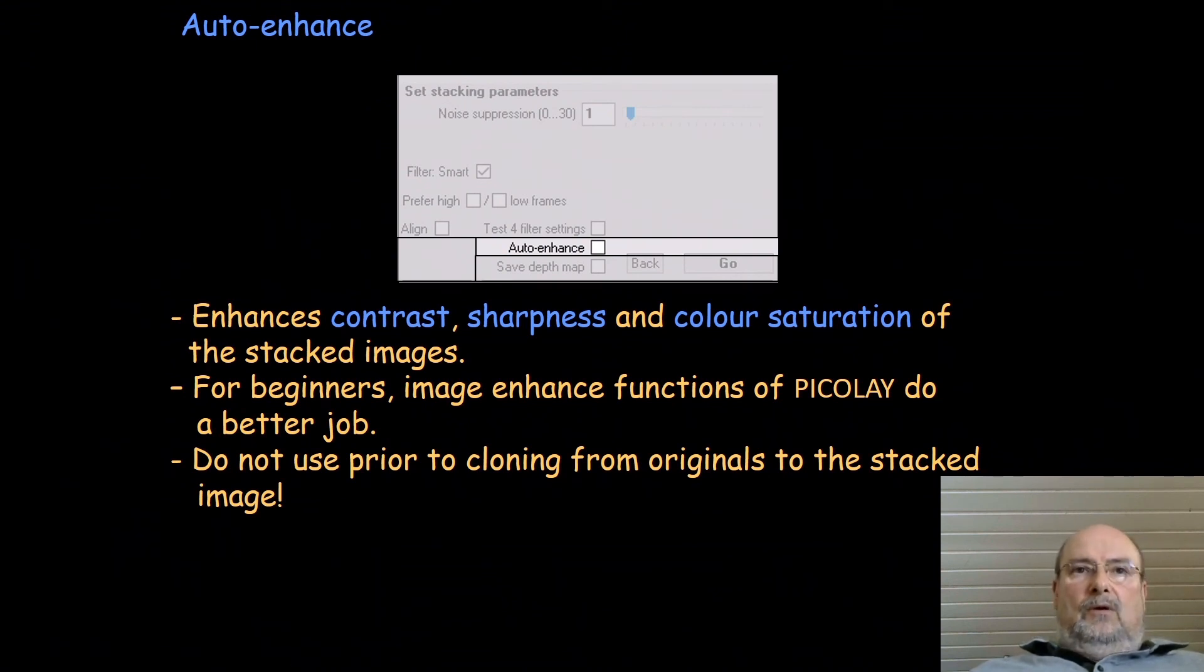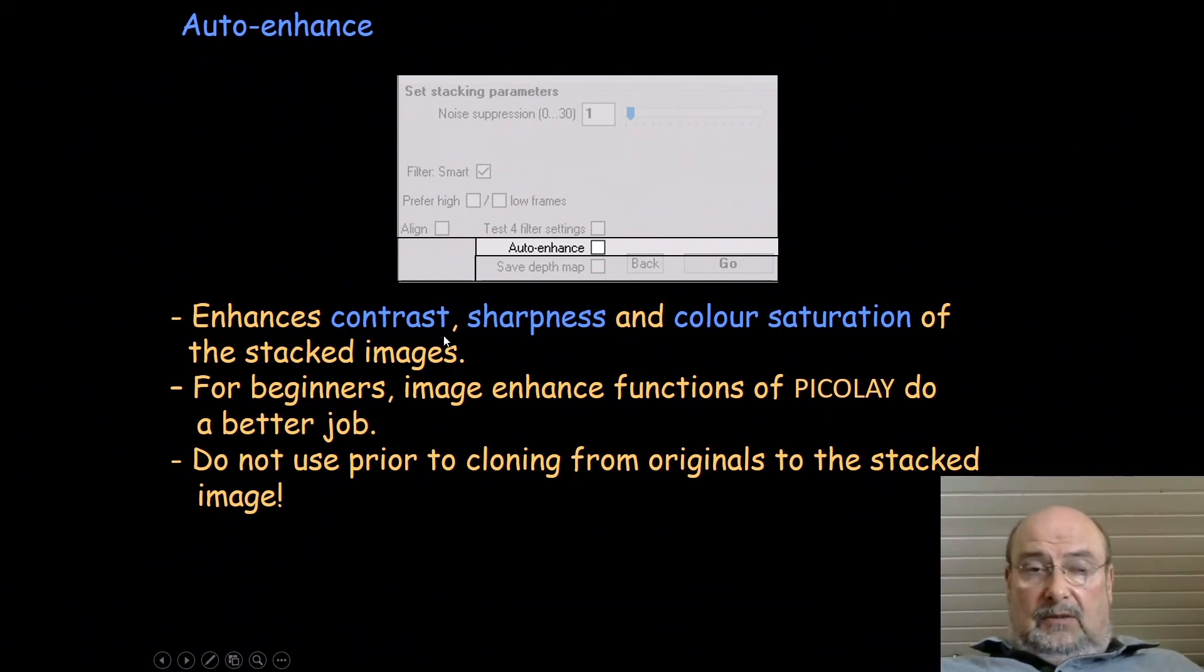Then there is another parameter: auto enhance. What does it mean? It leads to enhancement of contrast, sharpness, and color saturation of the stacked image. They're looking more crispy and a little bit more colorful. But actually I'm not recommending this very much. It's for beginners. If you're not willing to use the image enhancement functions of Picolet, then you could try it. Sometimes it gives a better result. Normally I would always use the image enhancement of Picolet. It does definitely a better job. One thing: do not use this function when you are later cloning something from the originals to the stacked image because the stacked image has been changed by these parameters. So then avoid it. It's for beginners.